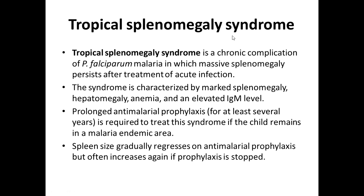Tropical splenomegaly syndrome is a chronic complication of falciparum malaria in which massive splenomegaly persists after treatment of acute infection. The syndrome is characterized by marked splenomegaly, hepatomegaly, anemia, and elevated IgM level. Prolonged antimalarial prophylaxis for at least several years is required if the child remains in the malaria endemic area. Spleen size gradually regresses on prophylaxis but often increases again if prophylaxis is stopped.